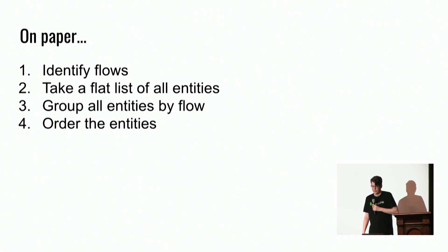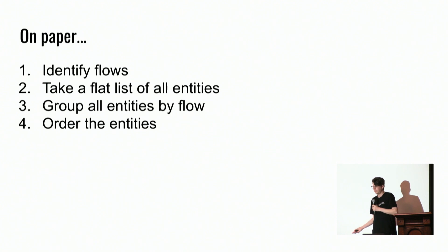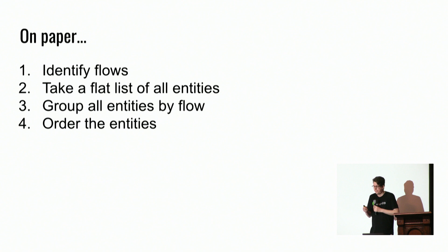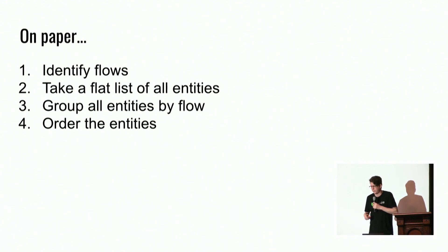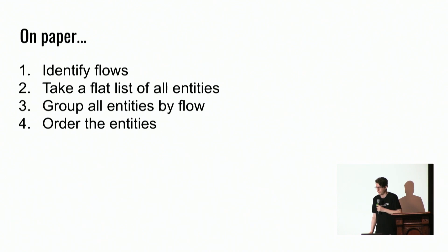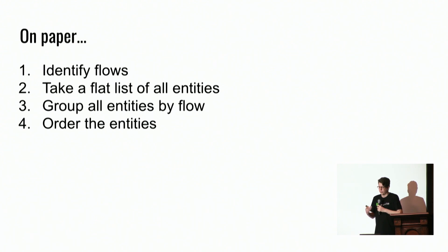There are two major phases in the process. First, we work on paper: identify our flows, take all the entities, group them by each flow, and then order them within that flow. Then we go into the actual code and edit some code comments. The first step is to identify flows — this should already be done for you if you're making an SDK, since you'll know what users want to do with it.